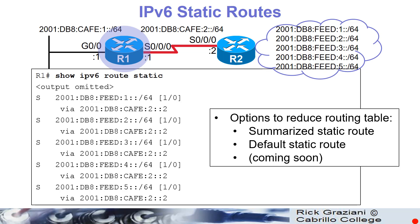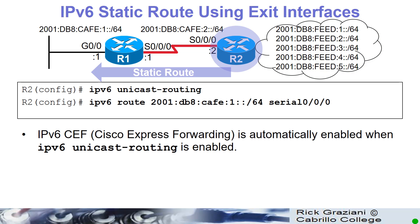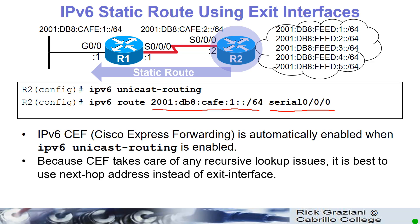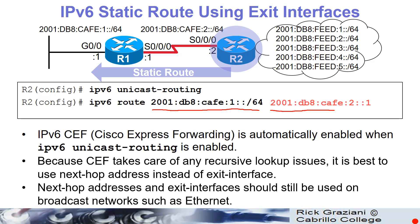Options to reduce multiple static routes would be summarization or a default static route, just like with IPv4 — you always have the special all-zeros address. For express forwarding, instead of listing the next-hop address, you can say: if a packet matches this address, send it out this interface. CEF takes care of any recursive lookup issues, so it's best to use the next-hop address instead of the exit interface. However, next-hop addresses and exit interfaces should still be used on broadcast networks such as Ethernet.